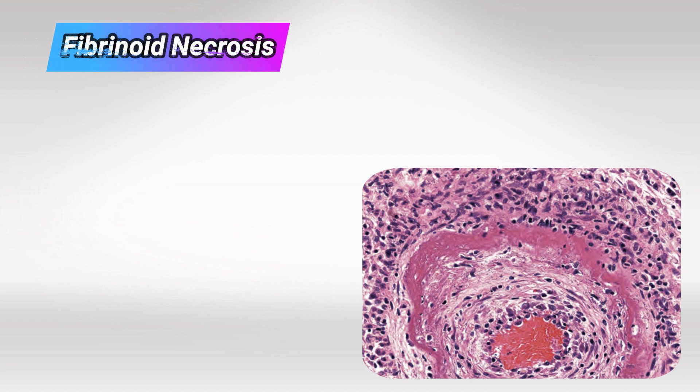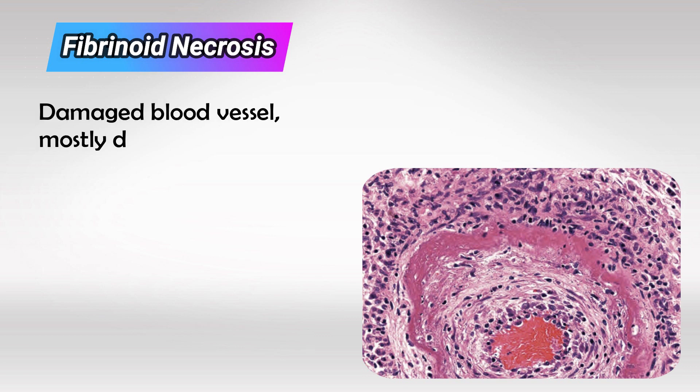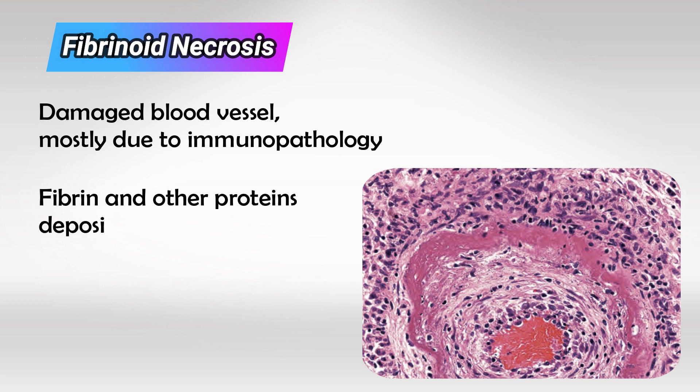The next type is fibrinoid necrosis. In this type, the wall of the blood vessels is damaged or exposed, most commonly as a result of an immune reaction. As the wall is exposed, fibrin and other blood components will seep into the wall and cause it to be thicker. So if we take a sample of an affected vessel, we will see a thick wall that is very pinkish.